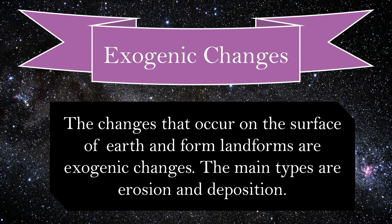The changes that occur on the surface of Earth and form landforms are exogenic changes. If we study the word exogenic, we understand it means 'exo' which means outside and 'genic' which means origin. So the changes that originate outside, meaning on the surface of Earth, are called exogenic changes.